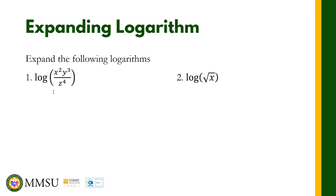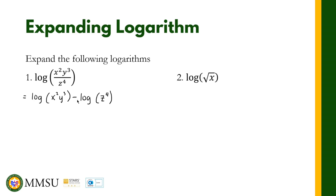Let us try to answer problem number one: expand the logarithm of x squared y cubed over z raised to the fourth. First, we need to use the quotient rule by taking the difference of the logarithms of the numerator and the denominator. Using the quotient rule, we can write this as the logarithm of x squared y cubed minus the logarithm of z raised to four. Remember, we use subtraction when there is a quotient — a logarithm of a quotient.